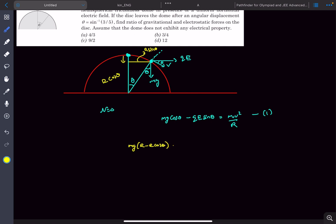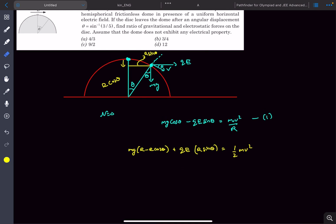So that would be the work done and the work done by the electric force will be the force QE multiplied by the horizontal displacement, which would be r sin theta and this would be equal to the change in kinetic energy. So that would be half m v squared.